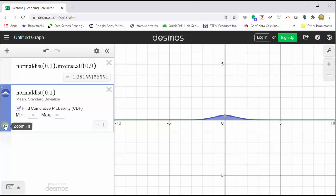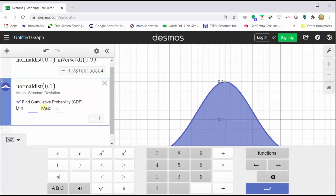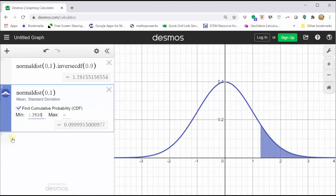Let's click zoom fit. Let's verify the area to the right of the Z-score is 0.1 by entering a minimum of approximately 1.2816. We can leave the max at infinity. If we close the Desmos keypad, notice how we can see the area to the right, which is approximately 0.1.